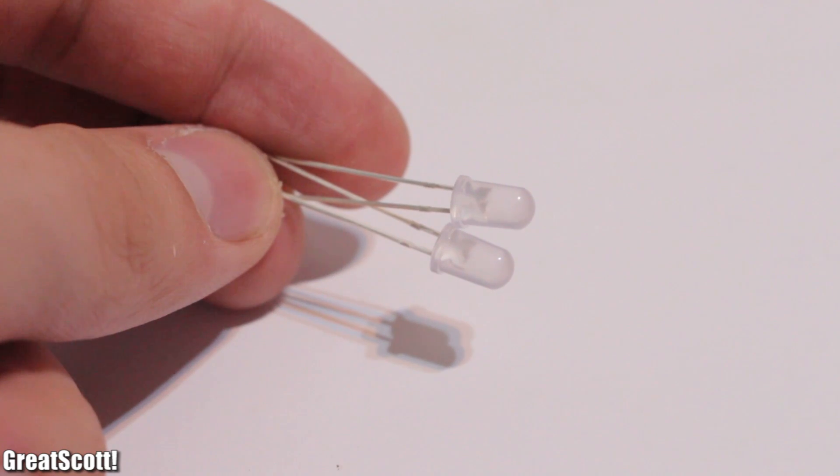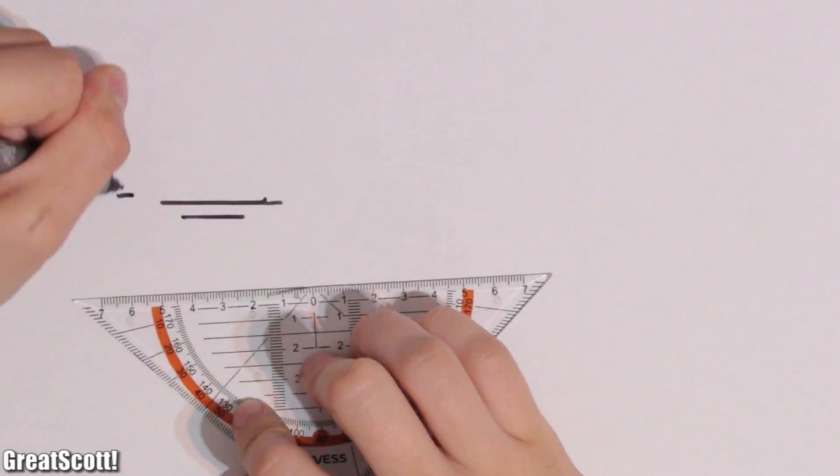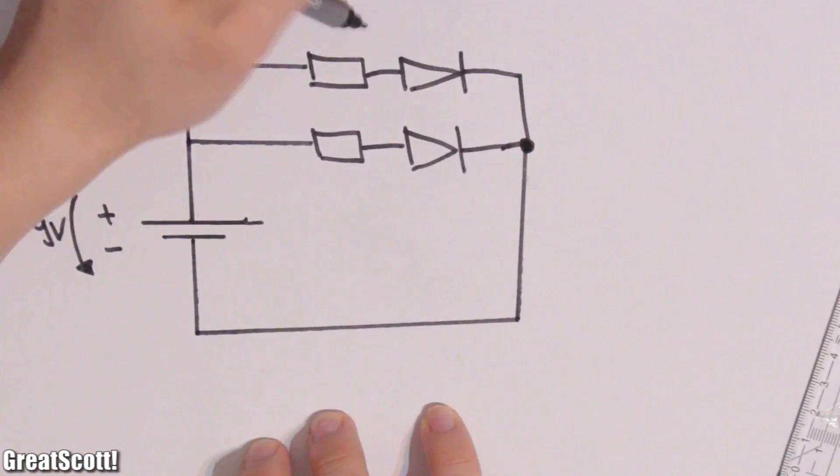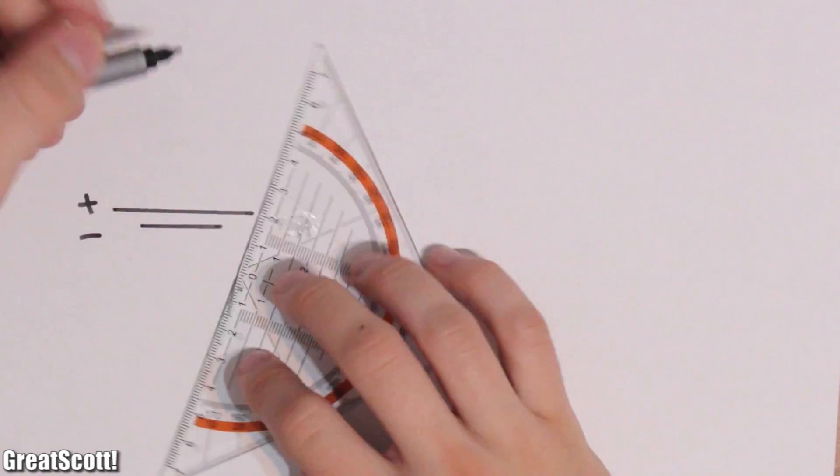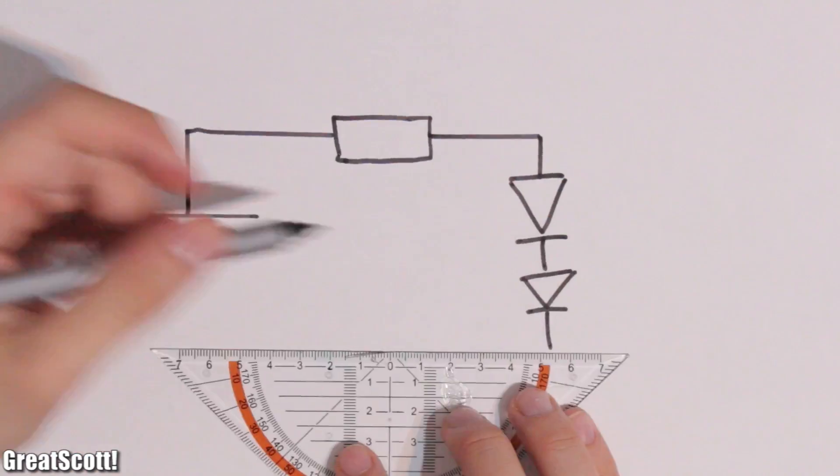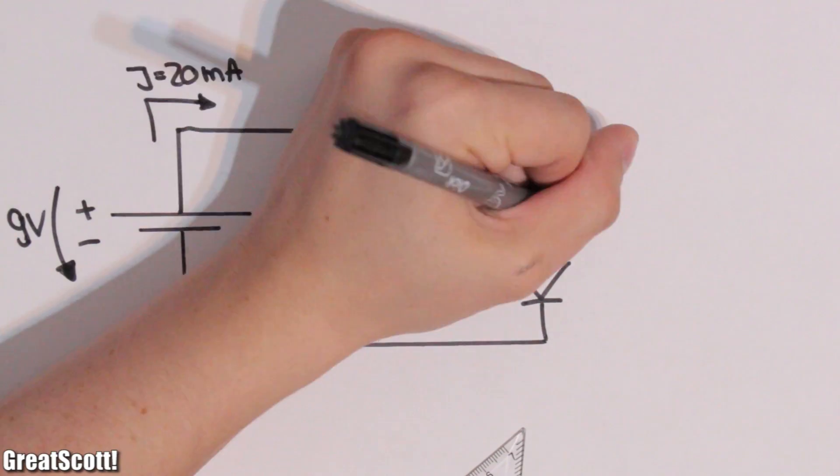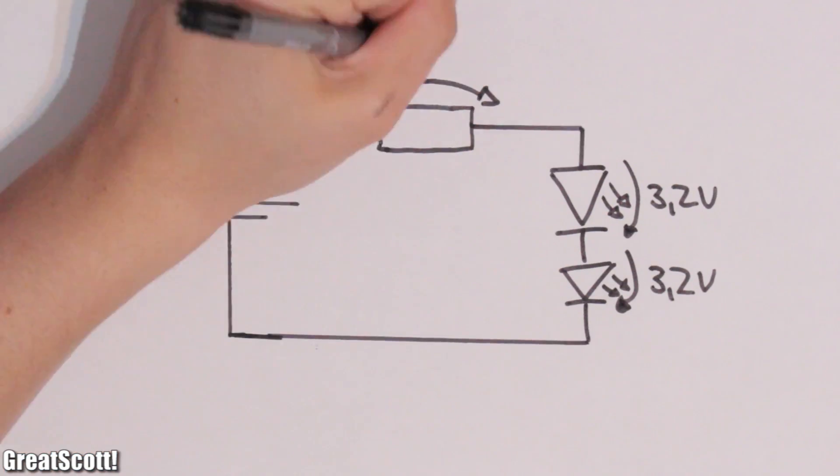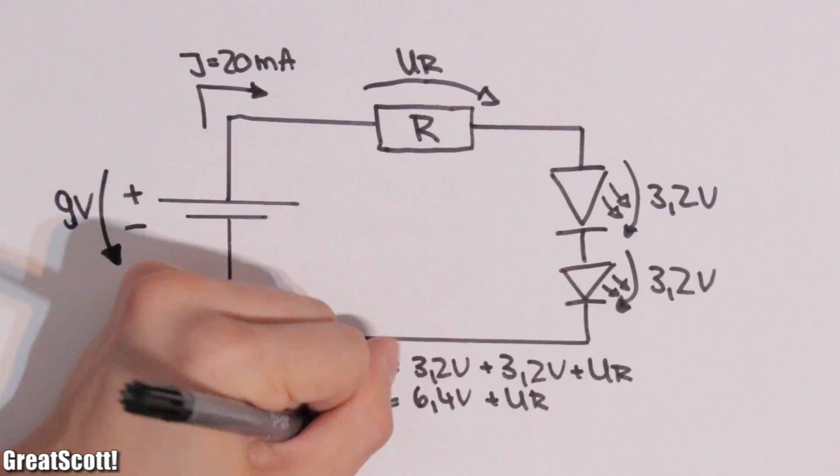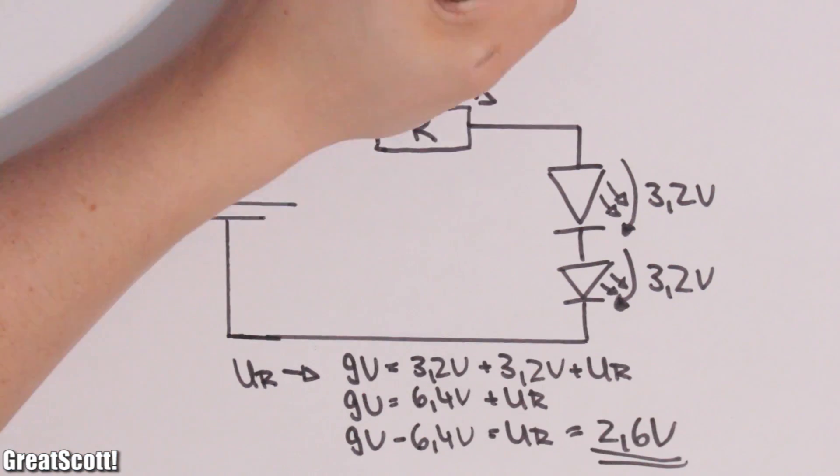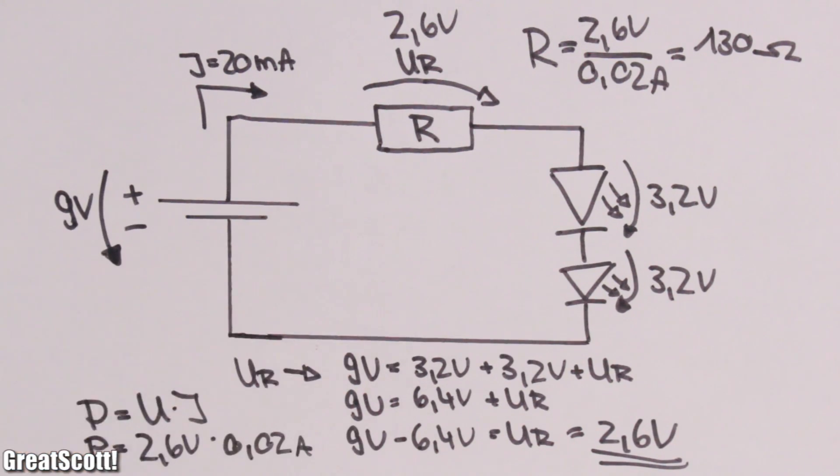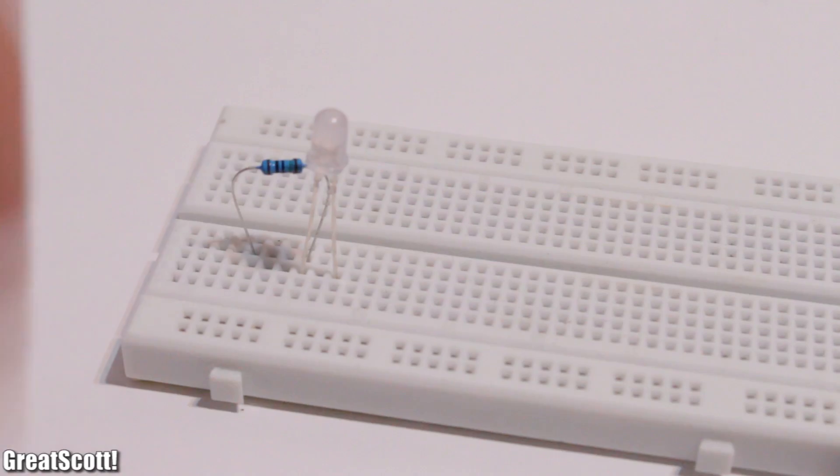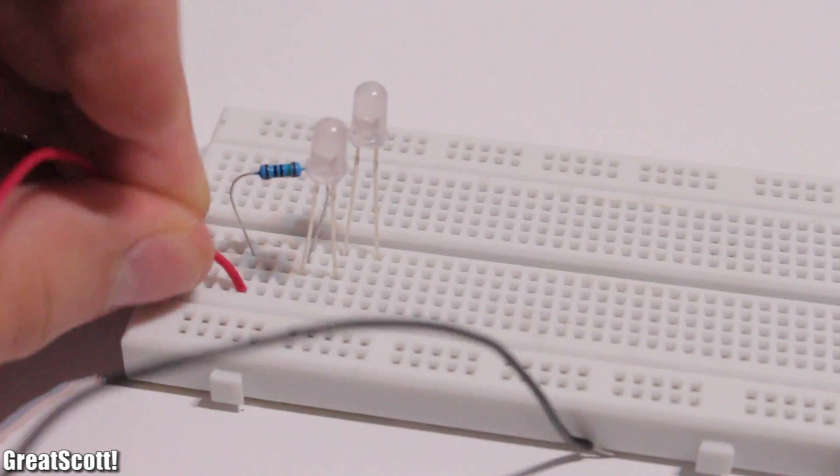Now you want to light up two of your LEDs. You could build the same resistor LED combination in parallel, but that is a waste of power. Just put the two LEDs in series and repeat the same calculation process. This time we only have a voltage drop of 2.6 volts across the resistor, a resistor value of 130 ohms, and a power loss of 0.052 watts. We got twice the light and half of the wasted power, that is awesome.